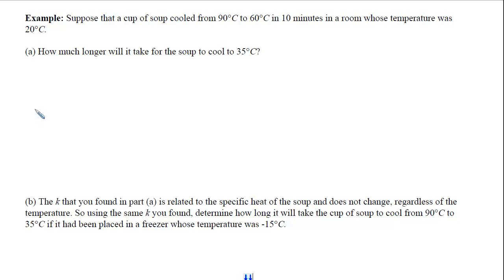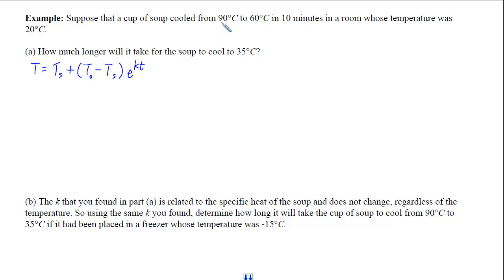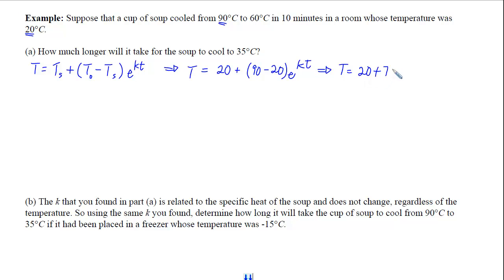In our example, we have a cup of soup cooling from 90 degrees to 60 degrees in 10 minutes in a room whose temperature is 20 degrees. The first question is how much longer it will take for the soup to cool to 35 degrees. We write the general Newton's Law of Cooling formula: the temperature at any time equals the surrounding temperature plus the initial temperature difference times e to the kt. Plugging in the initial temperature of 90 and room temperature of 20, the only remaining unknown is k.